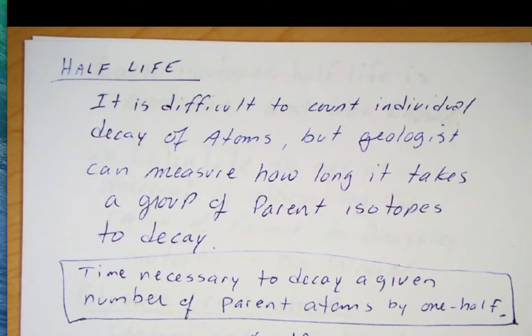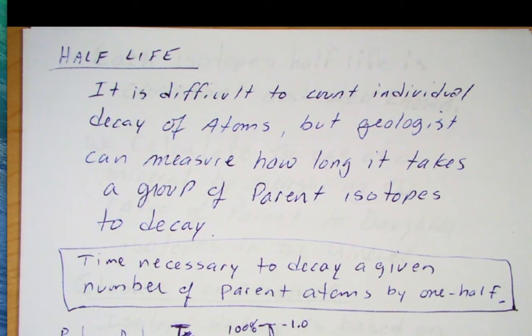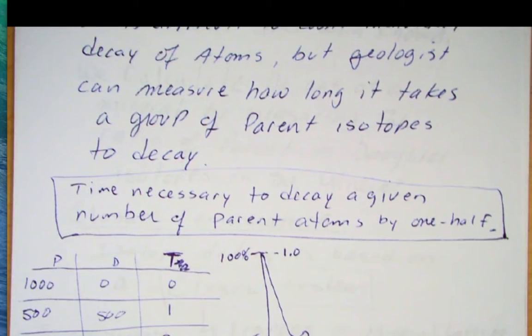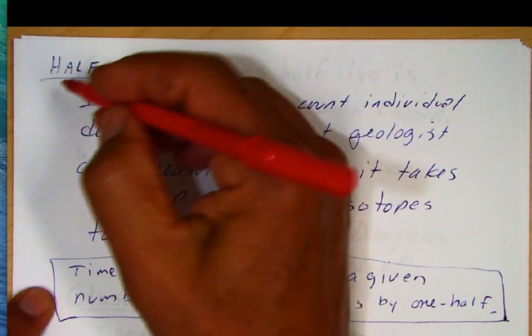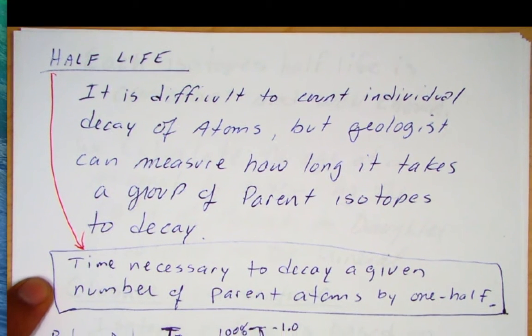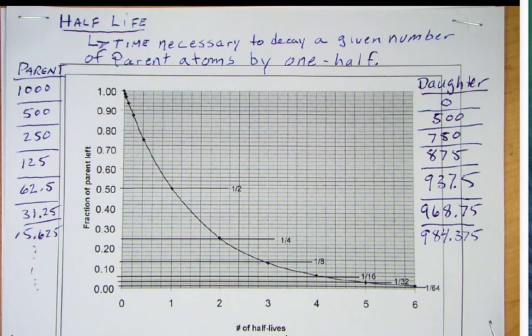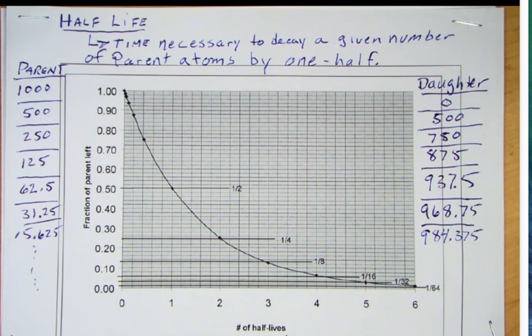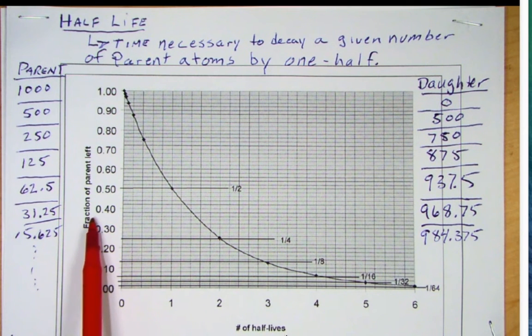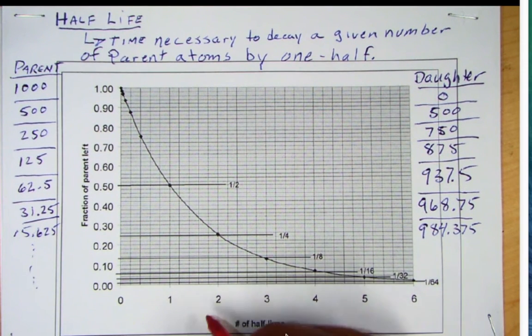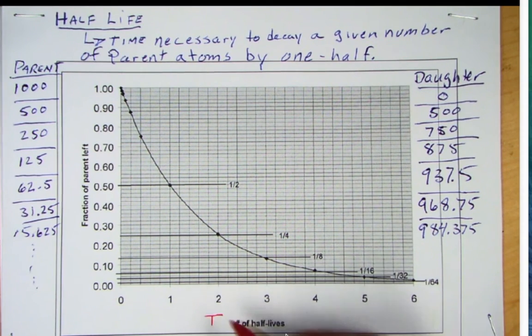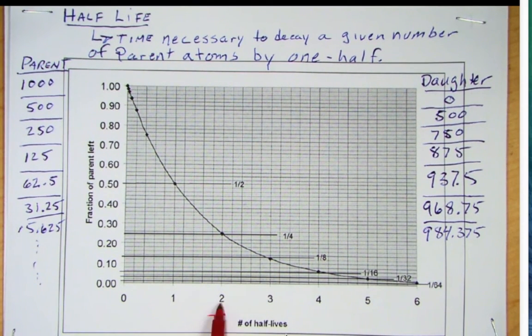This next concept is the half-life. And it's difficult to count individual decays of atoms, because atoms are tiny. But we can measure how long it takes for a group of parent atoms to decay. We can measure this more accurately or more easily. And remember, the half-life is the time necessary to decay a given number of parent atoms by one half. With that concept of half-life, we're going to create these decay curves. And the decay curve is going to have basically the fraction of parent remaining here on the y-axis, and the number of half-lives that have elapsed on this x-axis. And usually, we signify the half-lives, the number of half-lives as t, as t for time. One half-life, two half-lives, three half-lives.